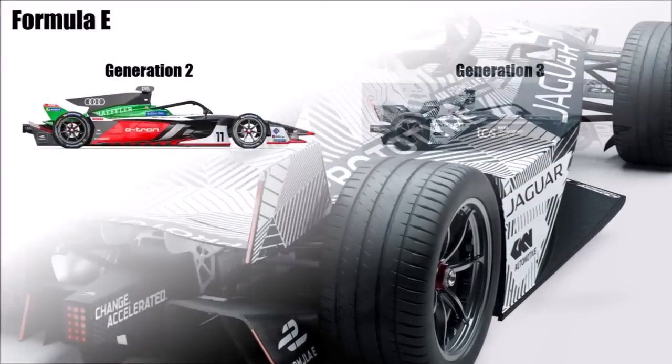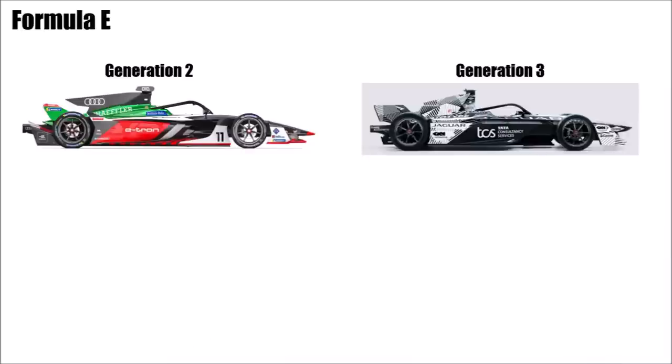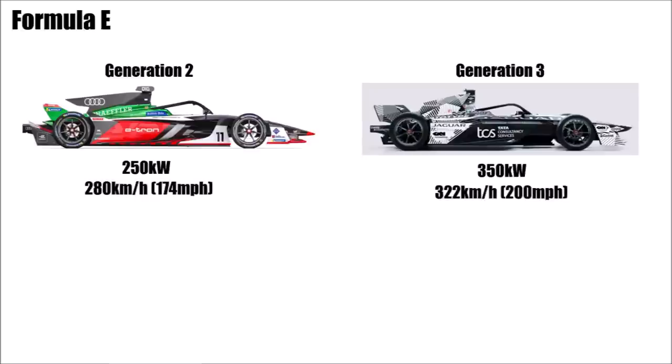Instead of being limited to 250kW in the rear engine, teams can now use up to 350kW. The top speed is now 322kph instead of 280kph with the previous generation.